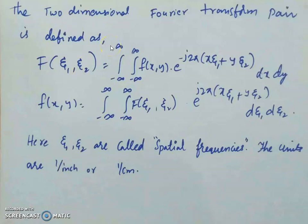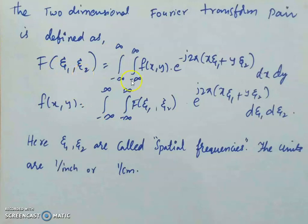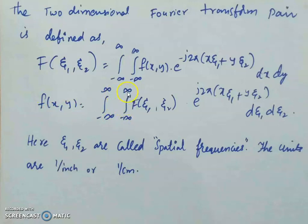What we need is not a one-dimensional transform but a two-dimensional transform, because we are looking at two-dimensional signals and systems. So we extend the one-dimensional definition to the two-dimensional case. F(ζ₁, ζ₂) is equal to the double integral from minus infinite to infinite of f(x, y) multiplied by e to the power of minus j 2π times (x·ζ₁ + y·ζ₂), dx dy.